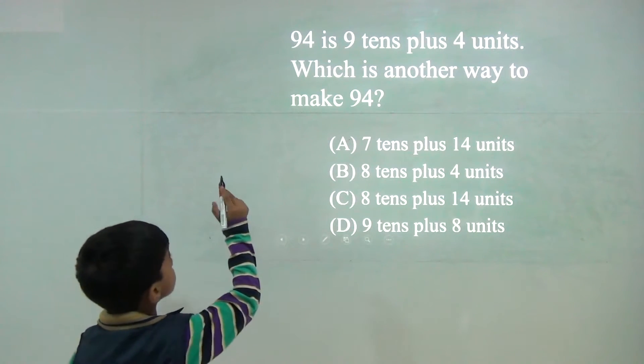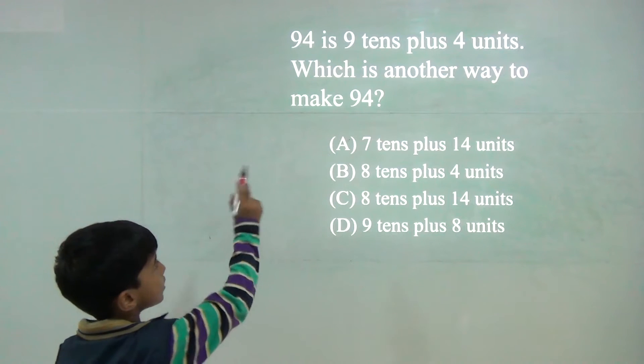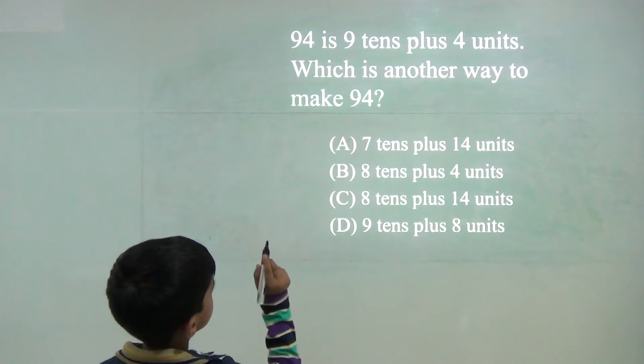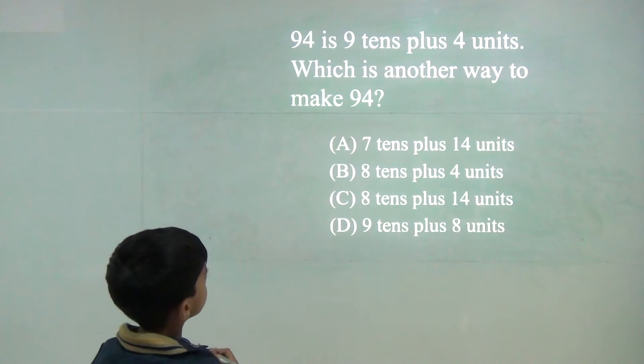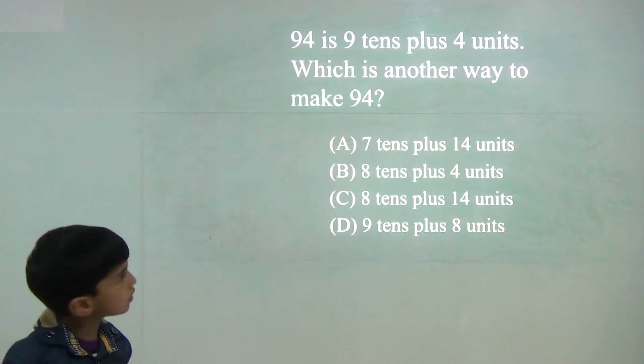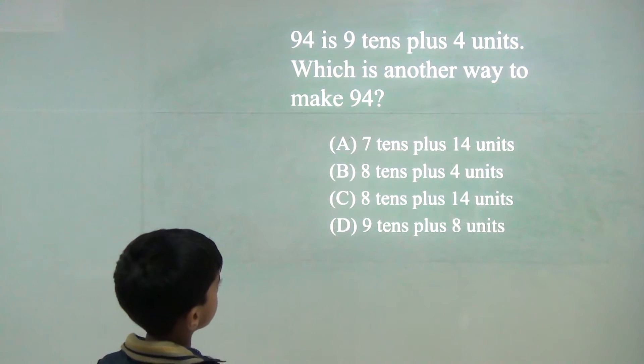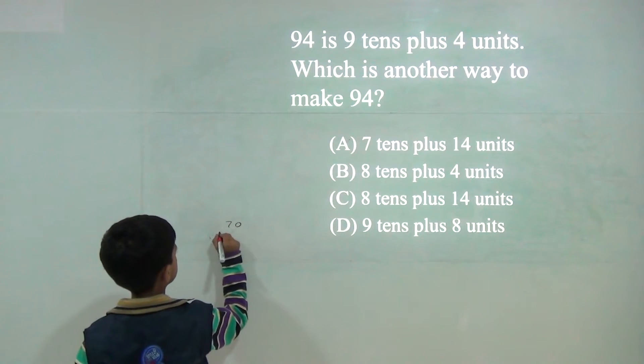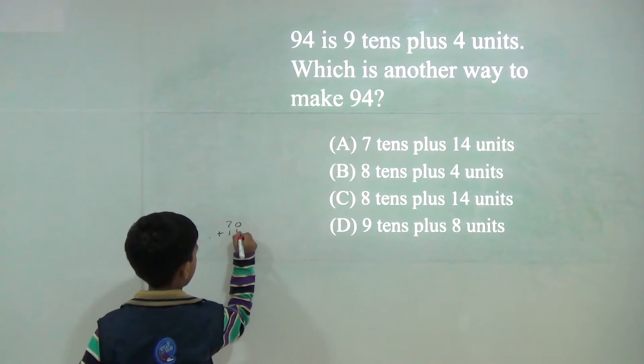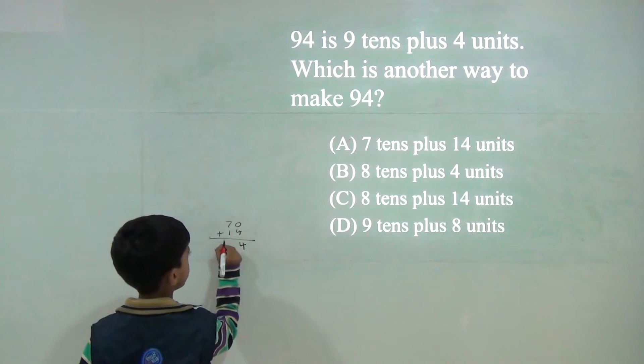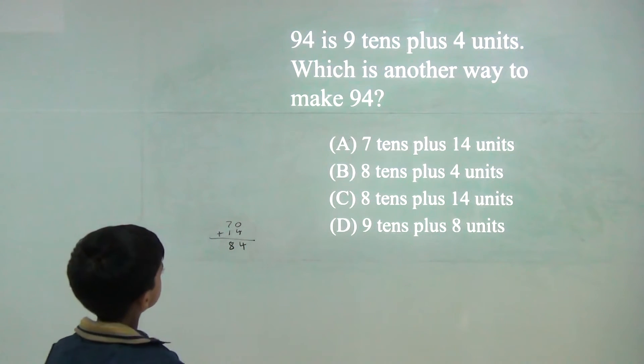Now 94 is 9 tens plus 4 units. Which is another way to make 94? So 7 tenths plus 14 units. 7 tenths plus 14 units. 4, 8.